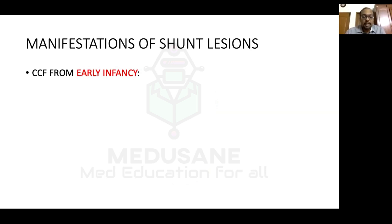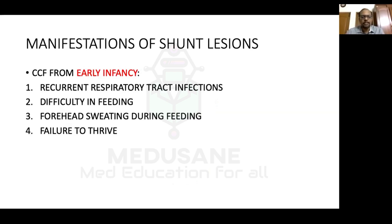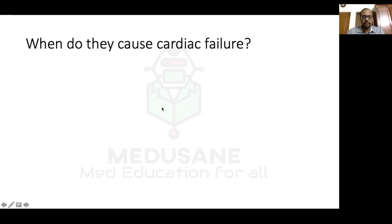Large shunt lesions manifest as congestive cardiac failure from early infancy. The symptoms to ask when diagnosing congestive cardiac failure in infancy include recurrent respiratory tract infections, difficulty in feeding or the suck-rest-suck cycle. In older children, symptoms include dyspnea on exertion, forehead sweating during feeding, and failure to thrive. Now, when do these shunt lesions cause cardiac failure?